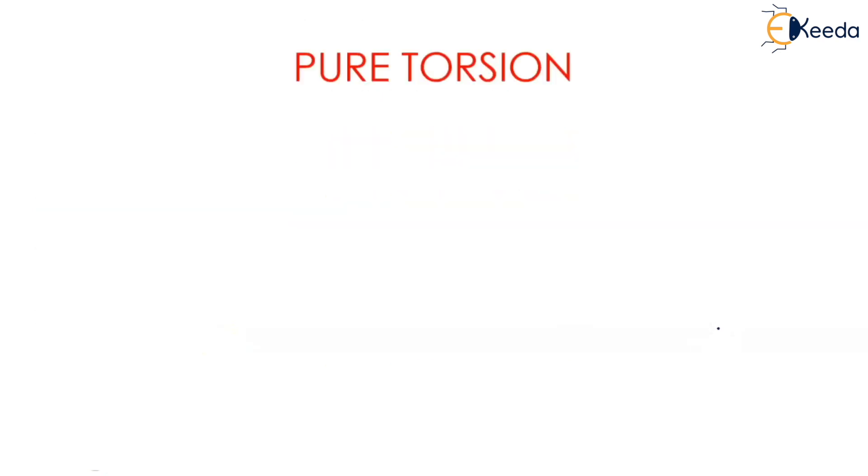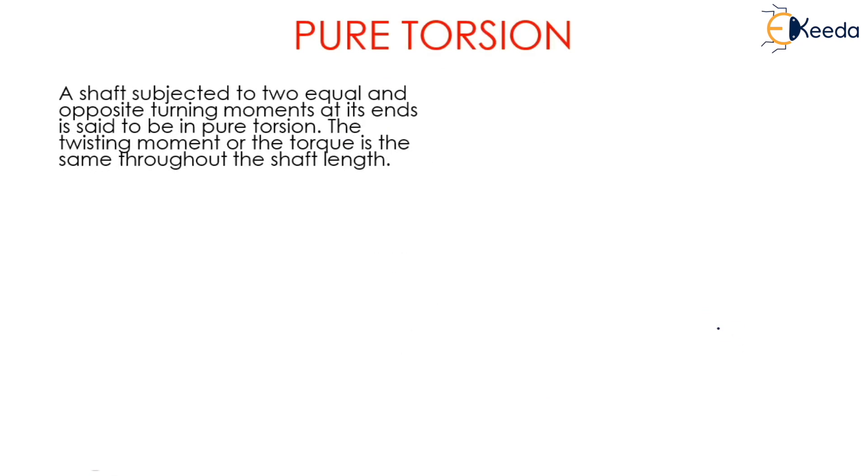Next is pure torsion. A shaft subjected to two equal and opposite turning moments at its ends is said to be in pure torsion. The twisting moment or torque is the same throughout the shaft length. In this image, we can see that AB is the shaft and two equal and opposite moments are being applied at ends A and B. This twisting moment or torque is the same throughout the length of the shaft.